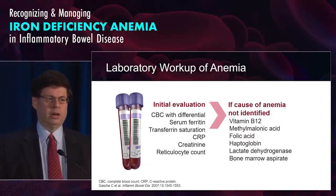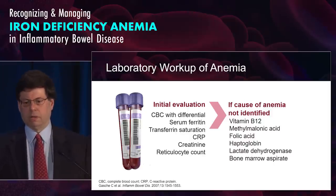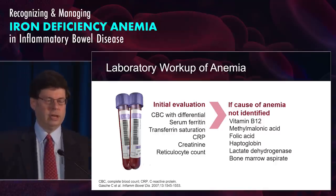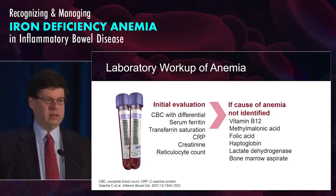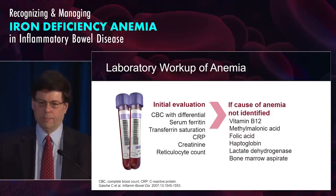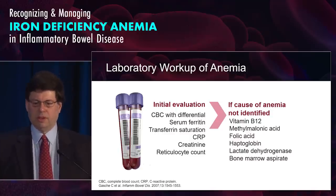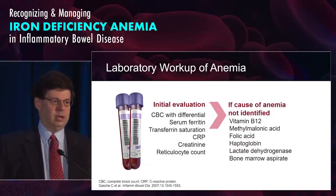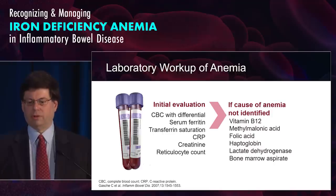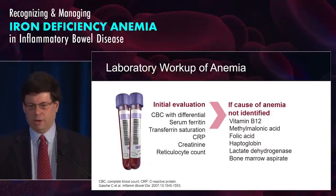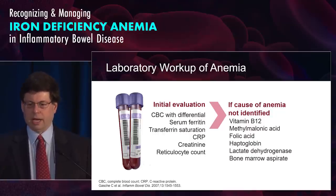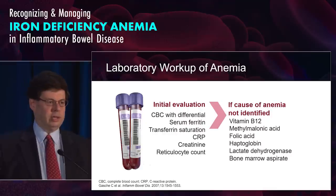So what do you do in the office? When you see the patient, you want blood tests to determine if they're anemic. Physical exam is not very good at detecting anemia — only when it's severe. So get a CBC with differential, a serum ferritin, transferrin saturation, a CRP, creatinine, and a reticulocyte count. If the cause of anemia is not identified, then get other studies secondarily.